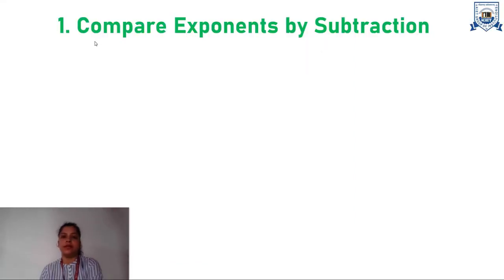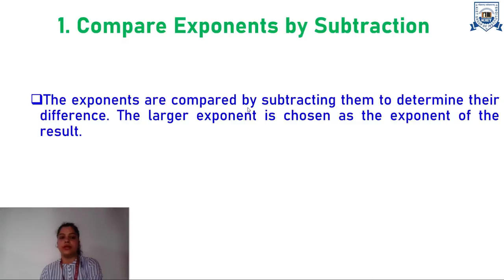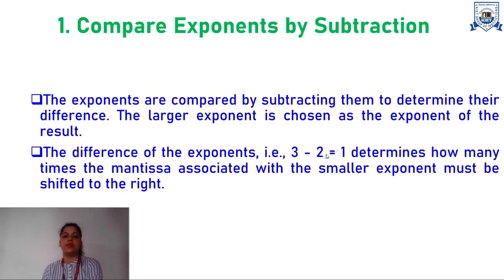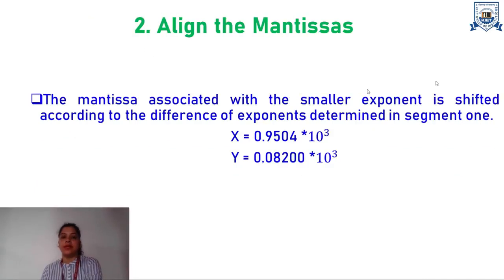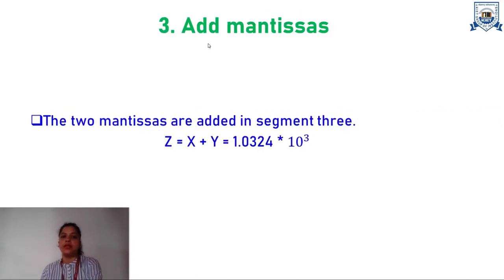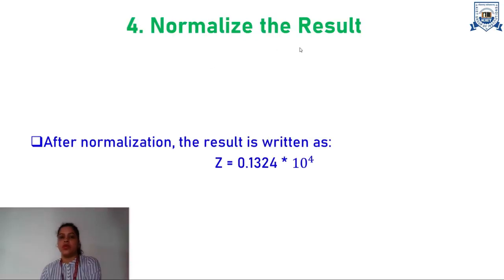In segment 1, comparison of the exponents by subtraction: the exponents are compared by subtracting them to determine their difference. The larger exponent is chosen as the exponent of the result. The difference of the exponents, for example 3 minus 2 equals 1, determines how many times the mantissa associated with the smaller exponent must be shifted to the right. In segment 2, alignment of the mantissas: the mantissa associated with the smaller exponent is shifted according to the difference of exponents determined in segment 1. Segment 3 deals with the addition of the mantissas, where the two mantissas are added. Within segment 4, normalization of the result is performed, and after normalization the result is written in the final form.